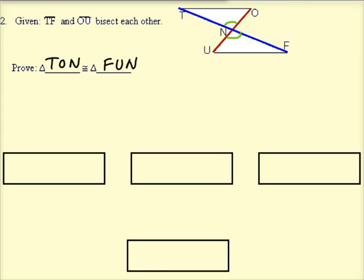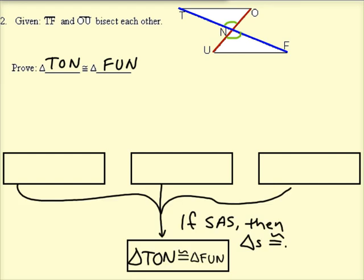So we know what it is we want to prove. We want to prove that triangles T-O-N and F-U-N are congruent. And we agreed we're going to use the side angle side congruence theorem. So we can talk about a pair of sides that are congruent, a pair of angles that are congruent, and another pair of sides that are congruent in each of those boxes.